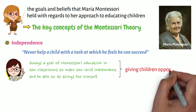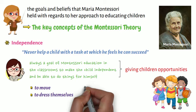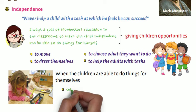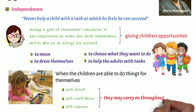This is achieved by giving children opportunities — opportunities to move, to dress themselves, to choose what they want to do, and to help the adults with tasks. When the children are able to do things for themselves, there is an increase in their self-belief, self-confidence, and self-esteem that they may carry on throughout their life.